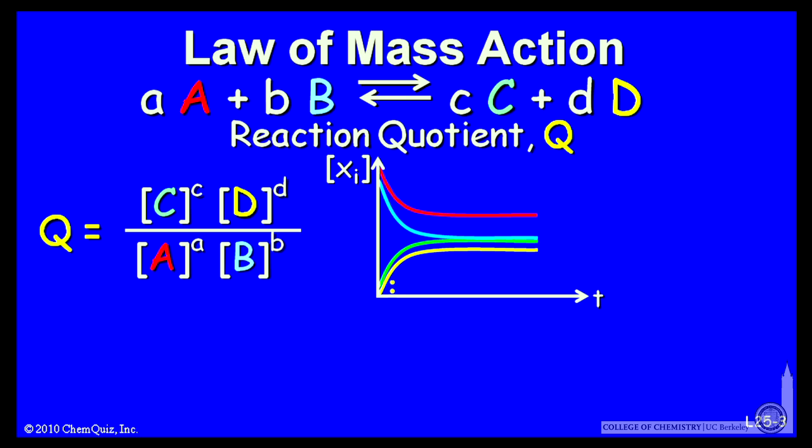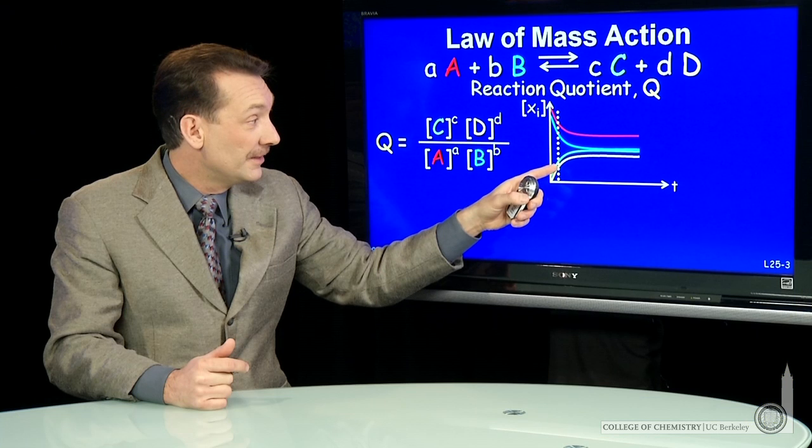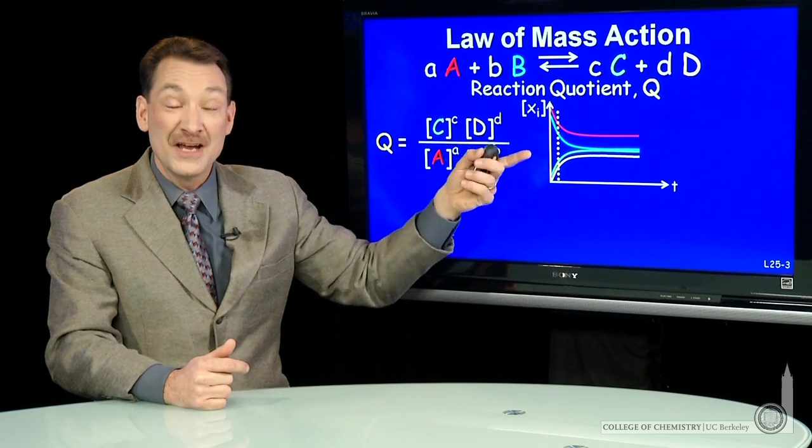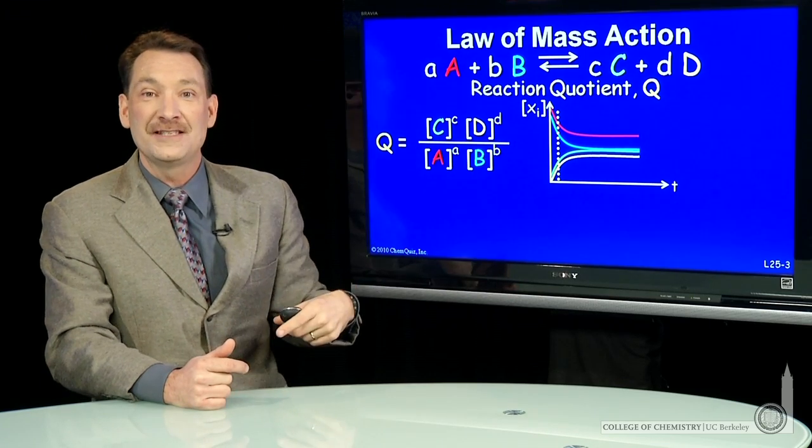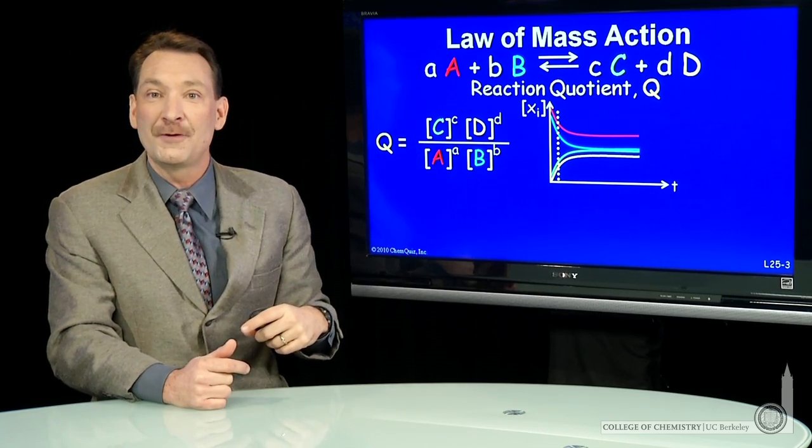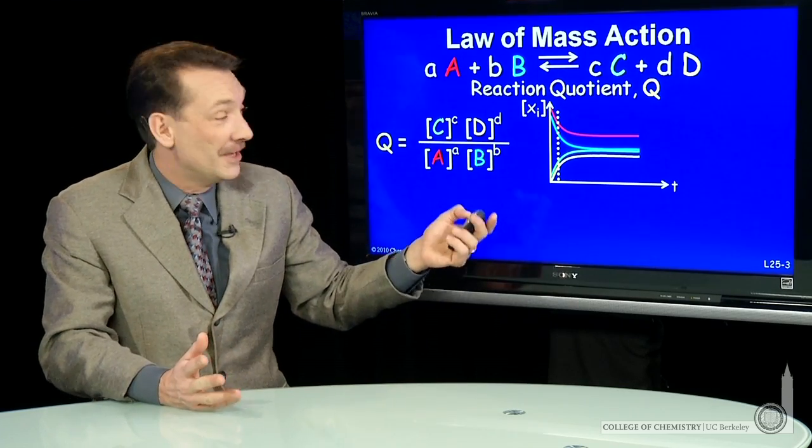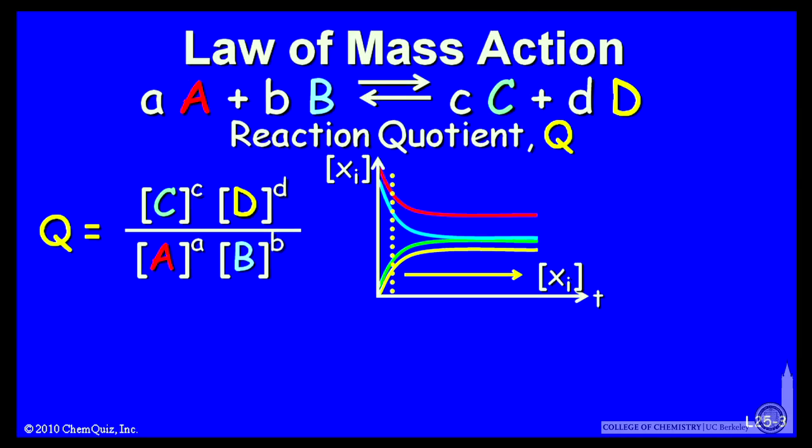At any point, I can pick a time and read the concentrations or measure the concentrations of A, B, C, and D and plug them into my reaction quotient. So I can calculate this number Q at any time. I just measure or read off the concentrations and calculate a value for Q. And Q will change over time as these concentrations change.